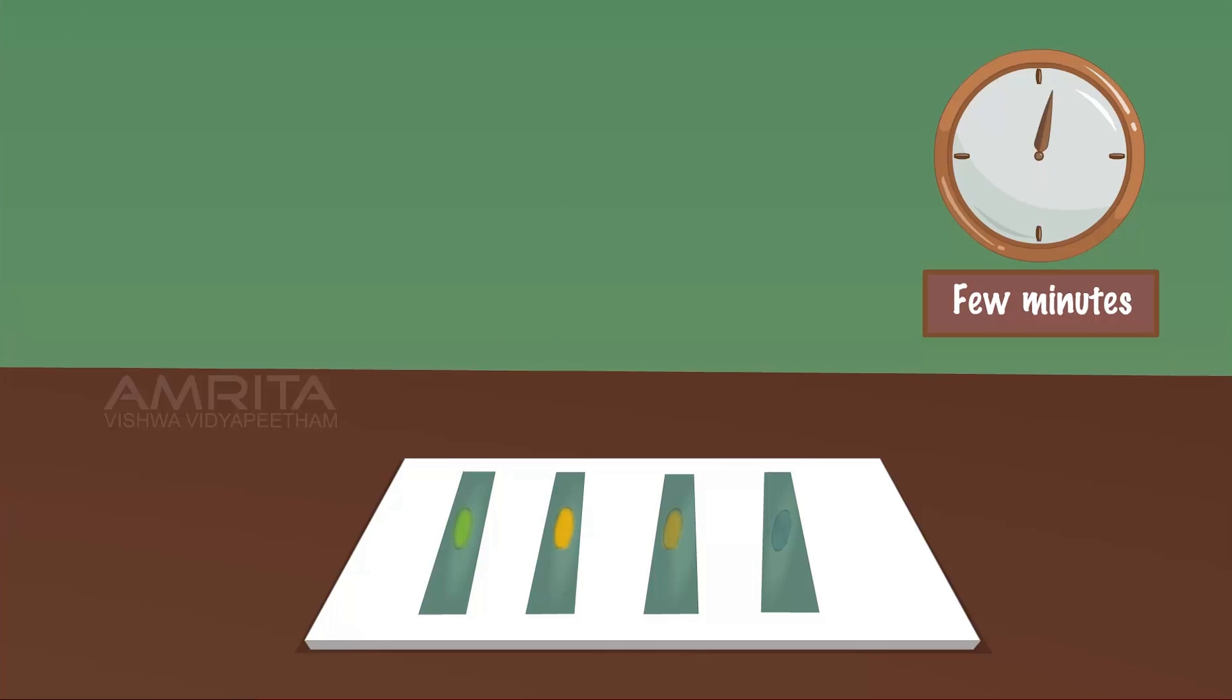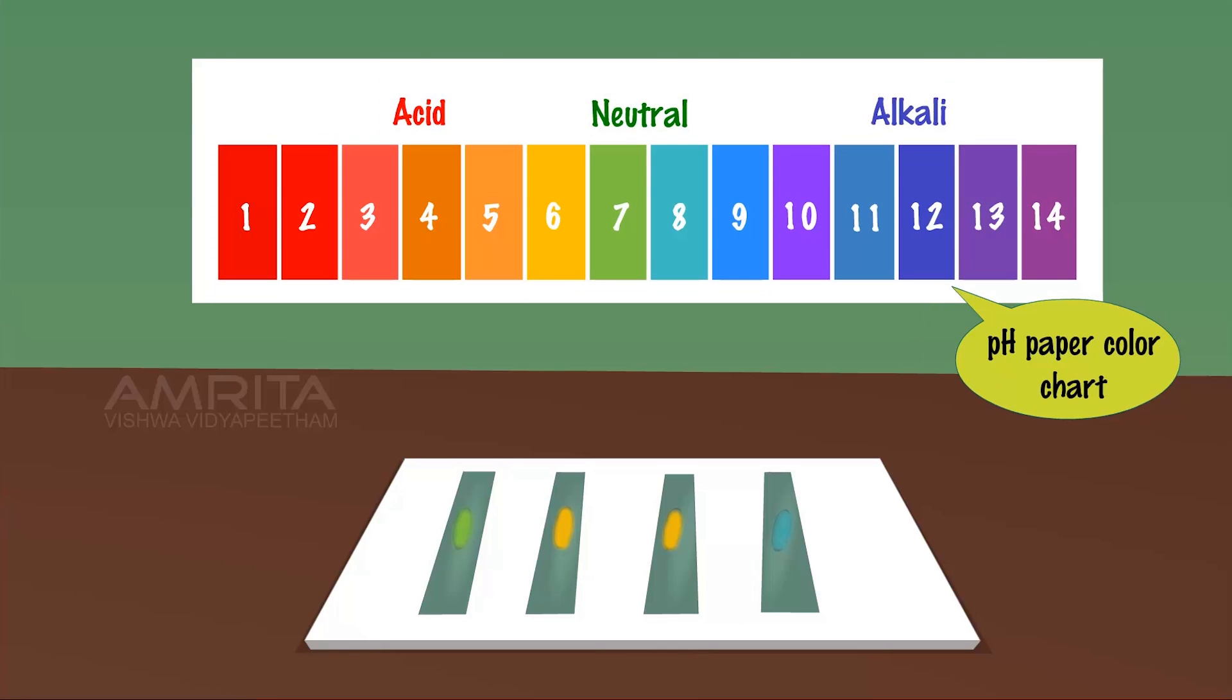Wait for some time for the pH paper strip to dry. Note the color and compare with the color chart given on the broad range indicator paper and get a rough estimate of pH of the sample solutions.